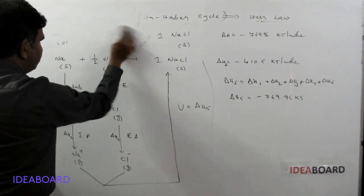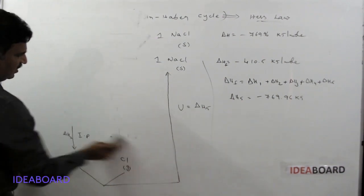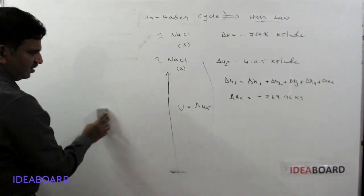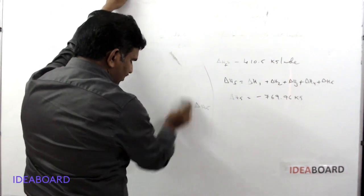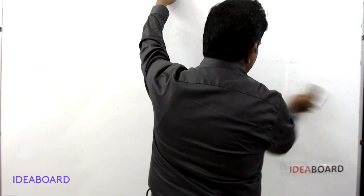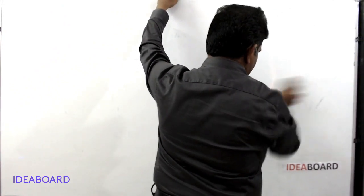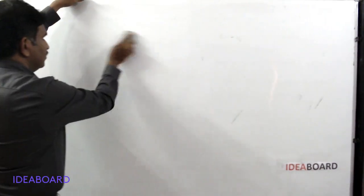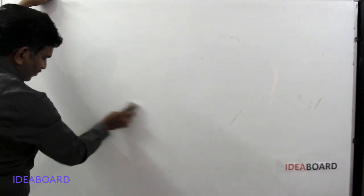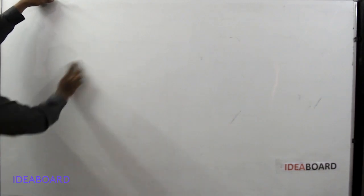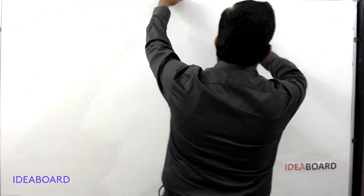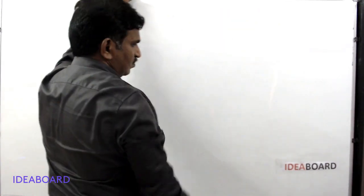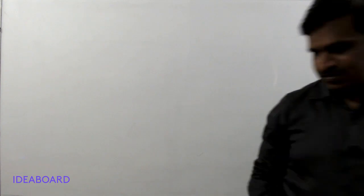Next, another important point: hydration energy. Hydration energy is mainly used for checking whether a compound is soluble or insoluble, and this can be explained based on the relationship between hydration energies and lattice energies.